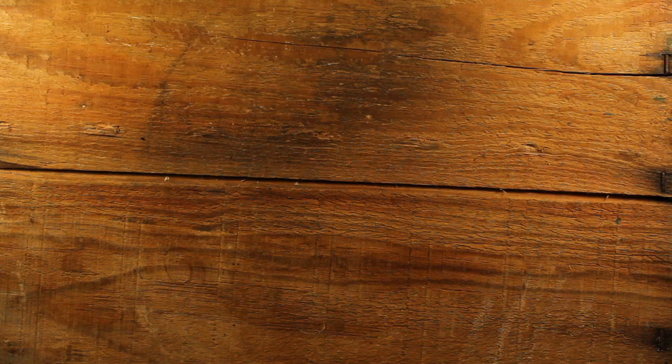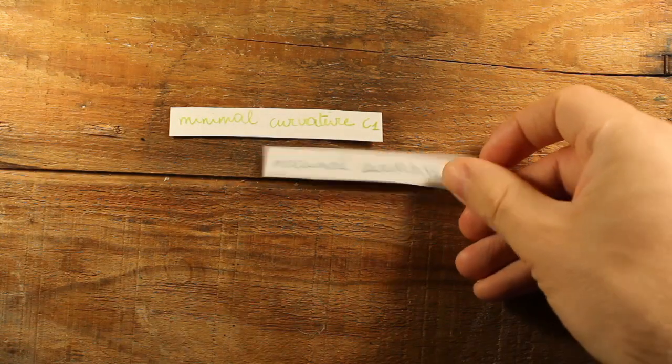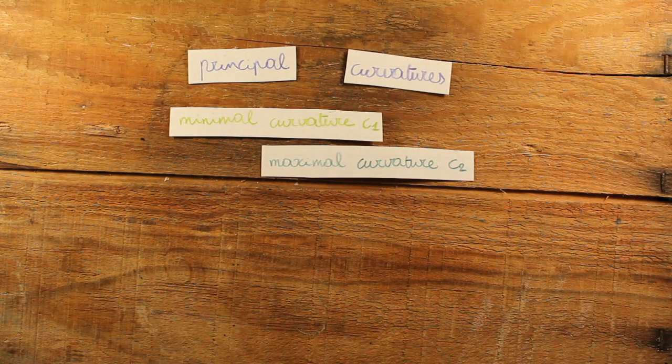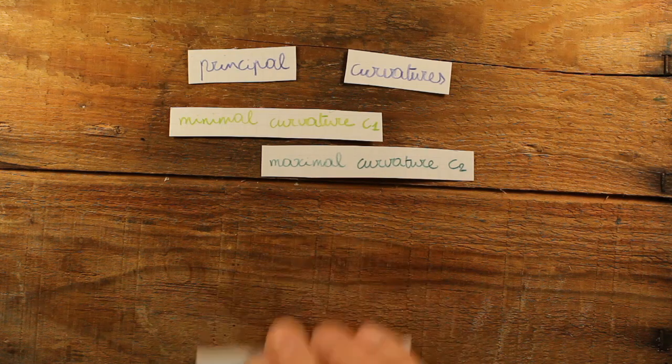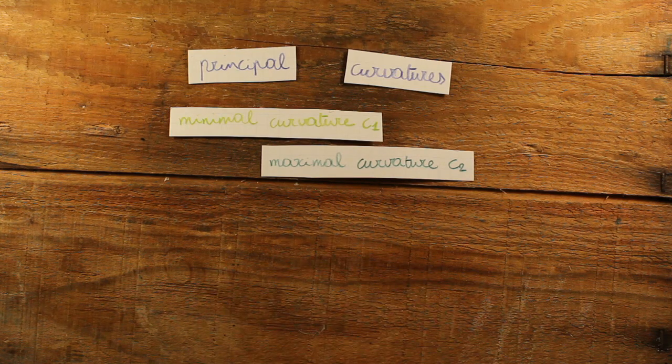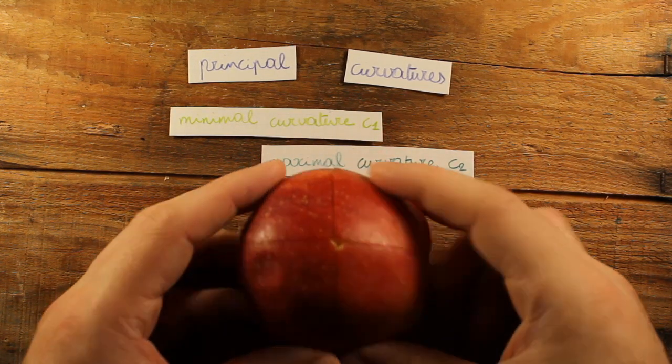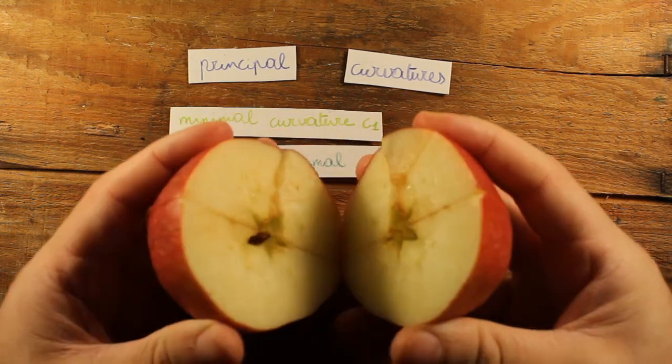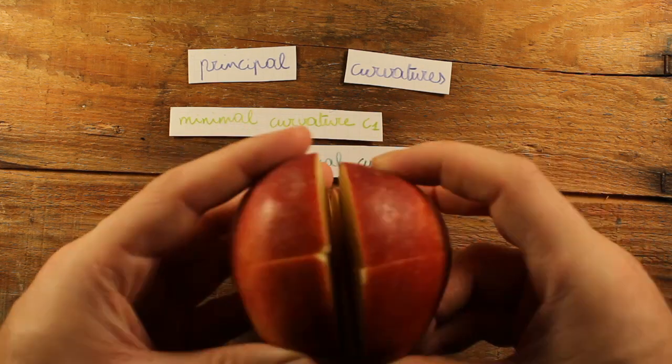Having an infinite number of curvatures in each point is not very practical. Do we really need all of them? As it turns out, we don't. Since we're working with 2D surfaces, we only really need two curvatures in each point. The maximal and the minimal, also called the principal curvatures. All other curvatures can be calculated with a simple formula. Moreover, the principal curvatures correspond to perpendicular lines on the surface. Looking back at the apple, I already cut it along the lines with the largest and smallest kissing circle corresponding to the minimal and maximal curvatures respectively. So these are the only two that really matter.